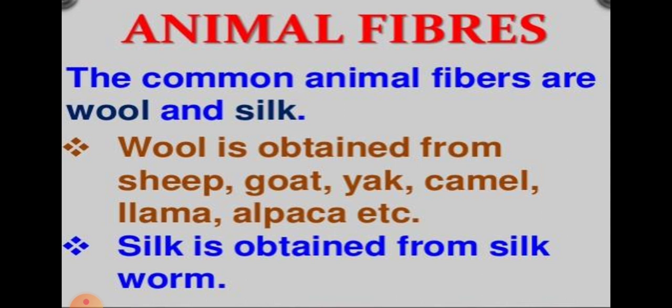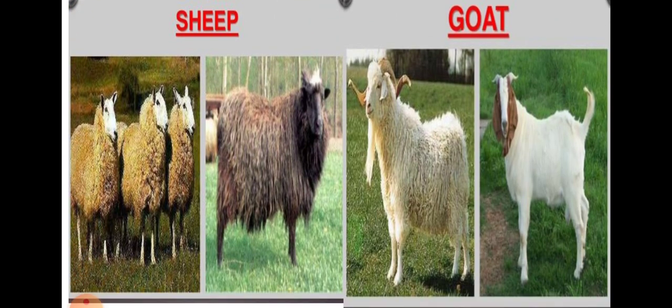Two important animal fibers are silk and wool. Wool comes from animals such as sheep, goat, yak, etc. Silk comes from silkworms. So wool and silk are called animal fibers. Wool is used for knitting sweaters and weaving shawls and other woolen cloth. Silk is used for making saris and other dresses. We will now discuss the production of wool and silk in detail one by one.